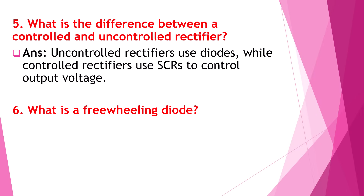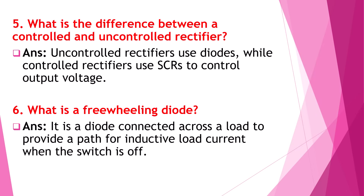What is a freewheeling diode? It is a diode connected across a load to provide a path for inductive load current when the switch is off.